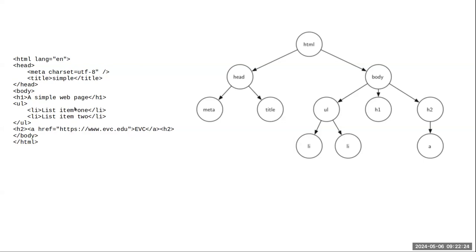That's pretty much all there is to HTML. We can take this structure — the indenting helps us see what's going on — and draw it as a tree. HTML is at the root, containing head and body; head contains meta and title elements; body contains an unordered list which contains list items. There's something called the Document Object Model in JavaScript where you can manipulate this tree to dynamically change page content.